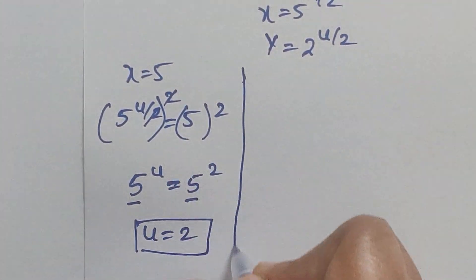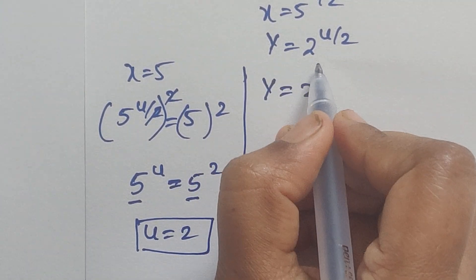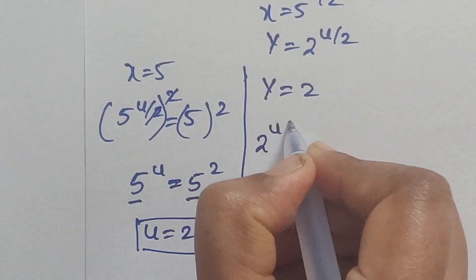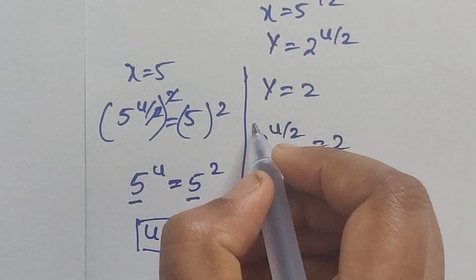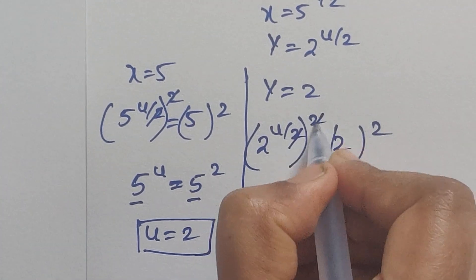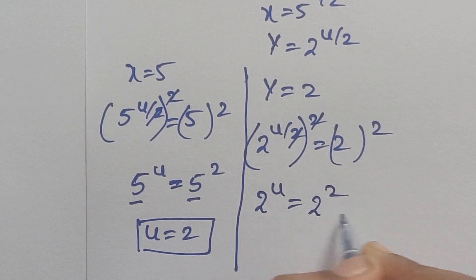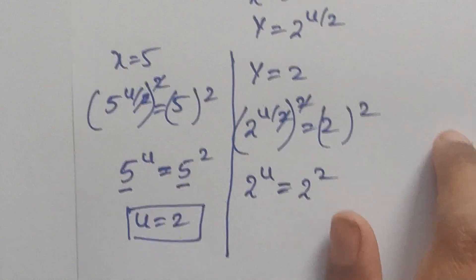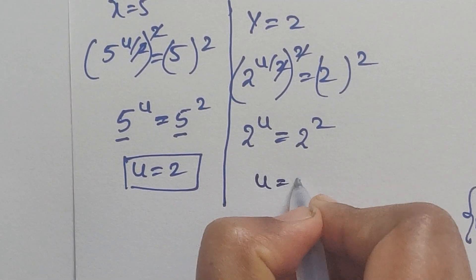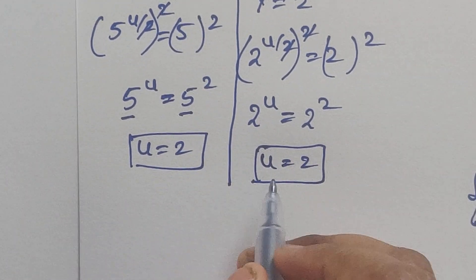Now for y: y equals 2, and y equals 2 to the power of u/2. So 2 to the power of u/2 equals 2. Applying squares on both sides: 2 to the power of u equals 2 squared. Again the bases are the same, so u equals 2, confirming our result.